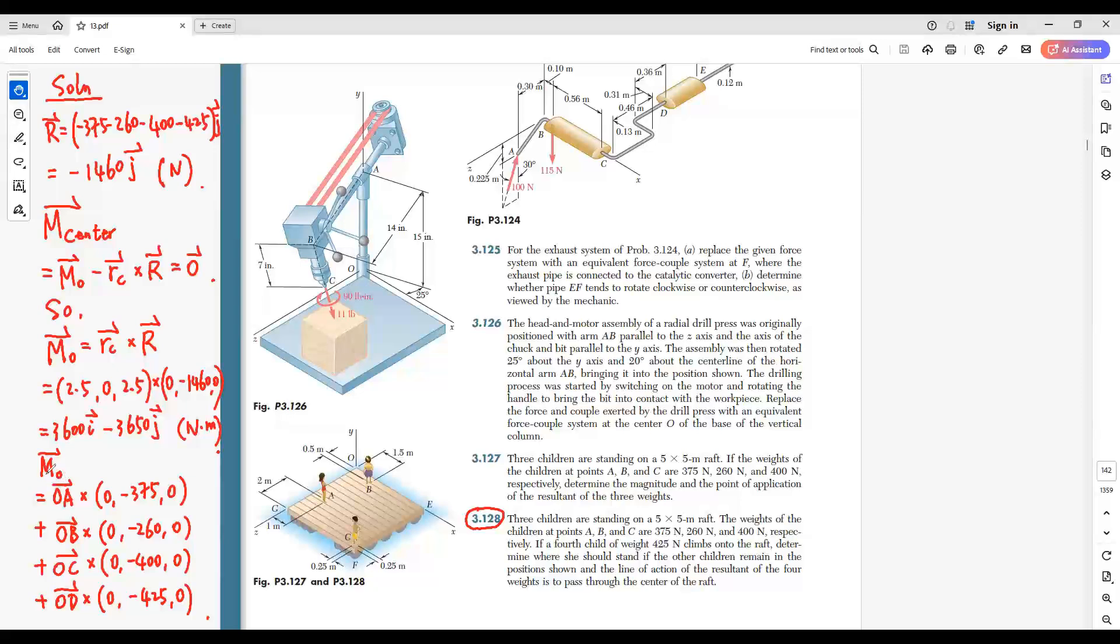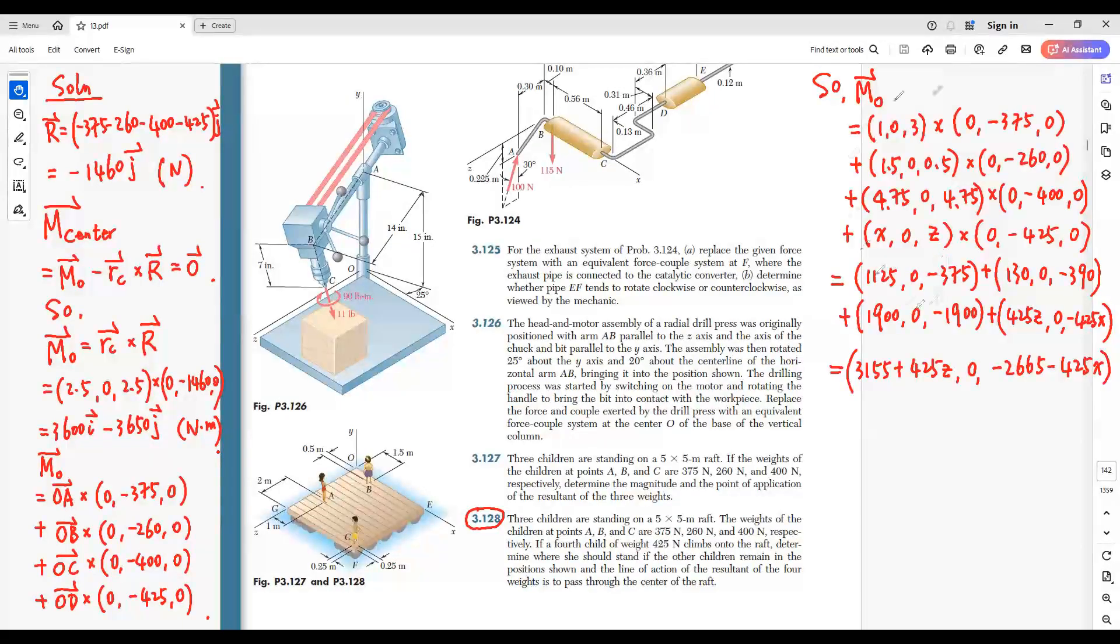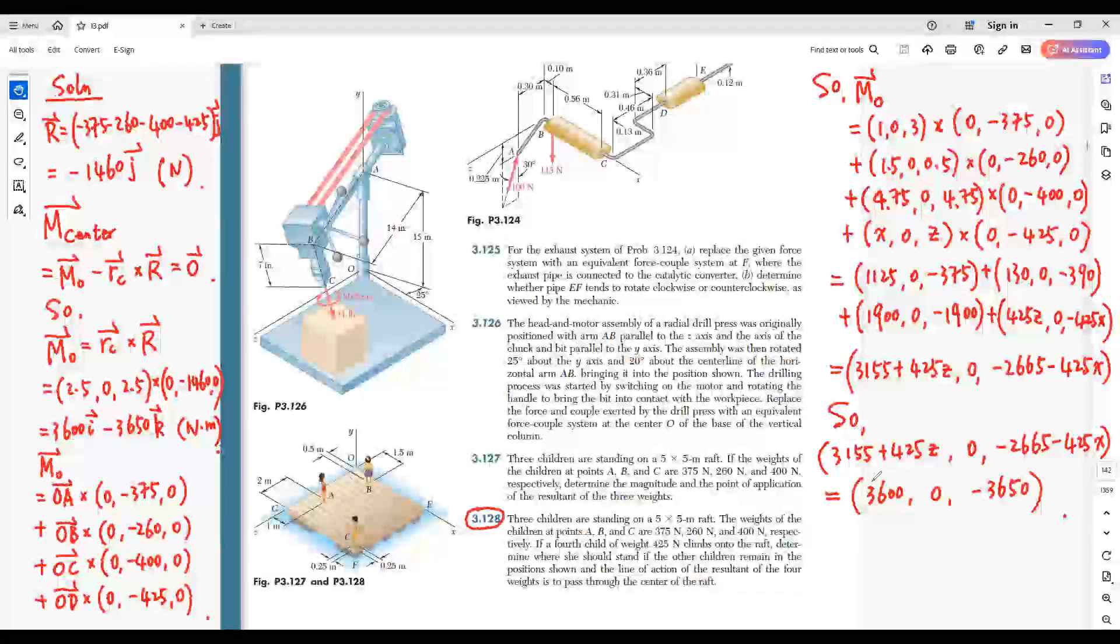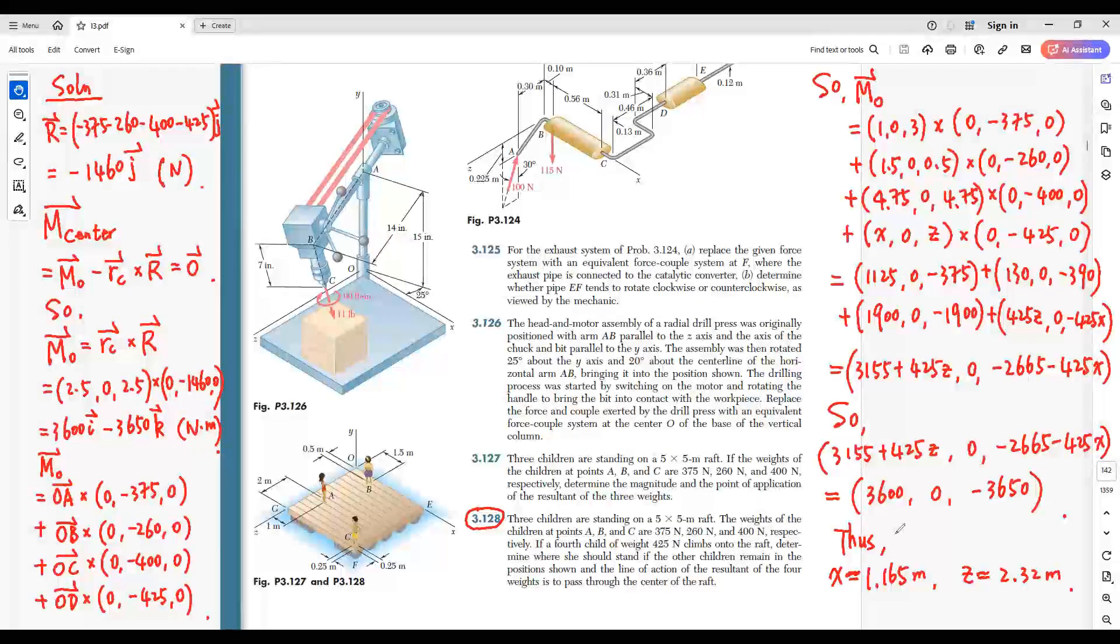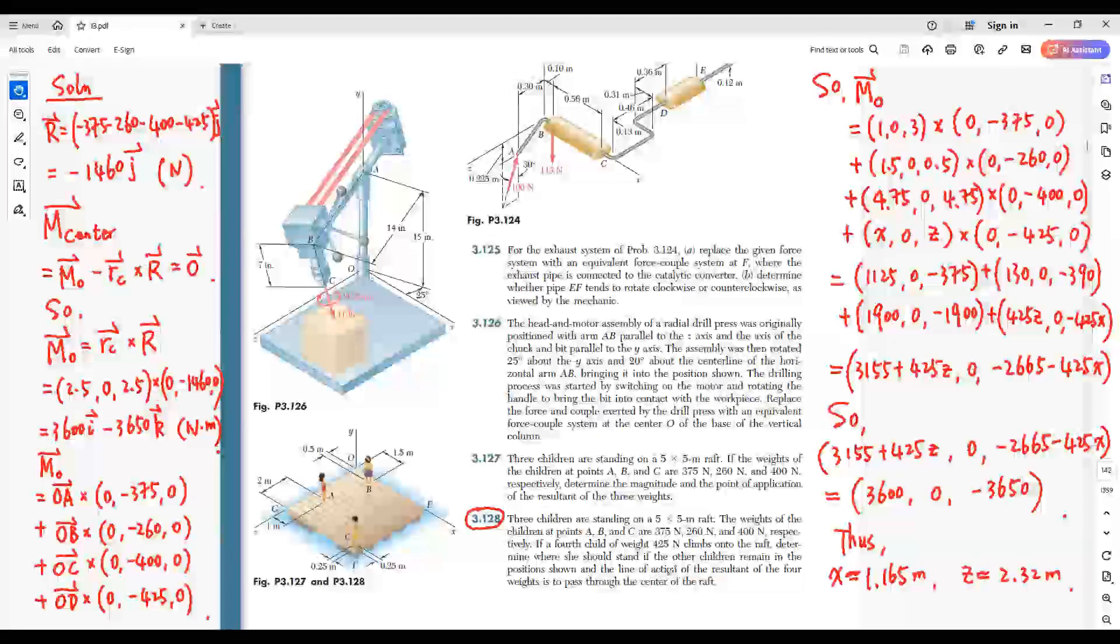On the other hand, the moment M0 is given by this one. This gives this one. So, we have this equation. This equation gives the coordinate of the fourth child.